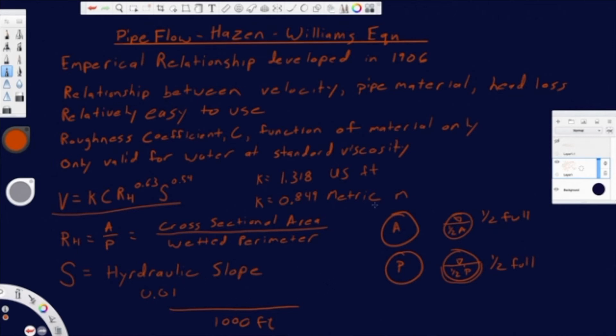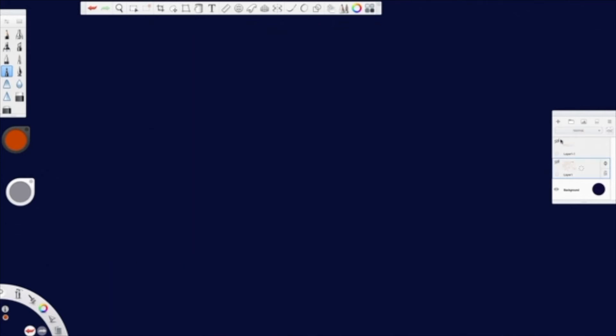And so really, that's what we're looking for. We want to know how much head loss per foot of pipe are we losing at this velocity for this pipe material.